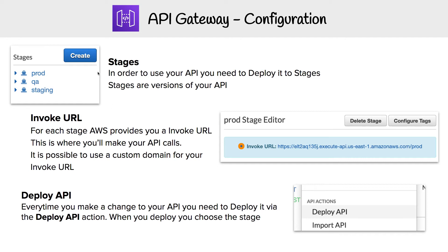Once you create a stage, you're going to get a unique URL that's automatically generated from AWS. Here I have one — this is called the invoke URL. This is the endpoint you're actually going to hit. So you do forward slash prod, and then whatever your endpoints are. We saw in the previous example we had forward slash tasks and forward slash projects — you just append them there and make the appropriate method, whether it's GET or POST. That's how you're going to interact with API Gateway.